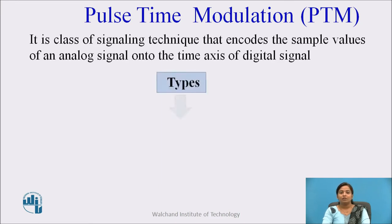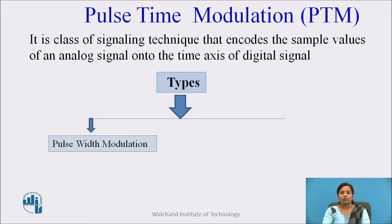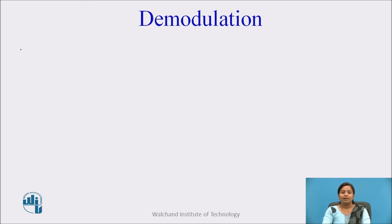PTM is divided into two types: Pulse Width Modulation and Pulse Position Modulation. In this session, we are going to study demodulation of PTM. Demodulation is the process of extracting original information from a modulated signal.